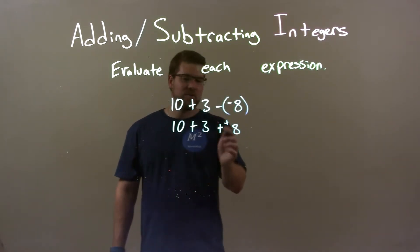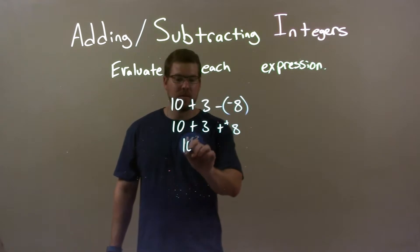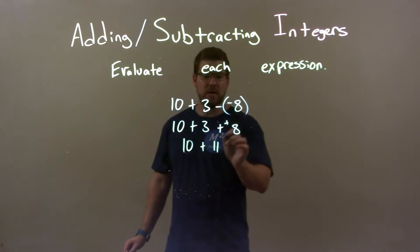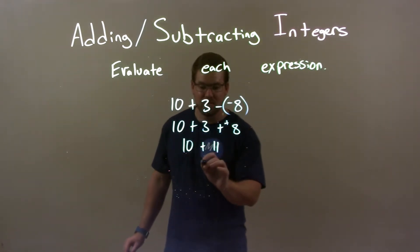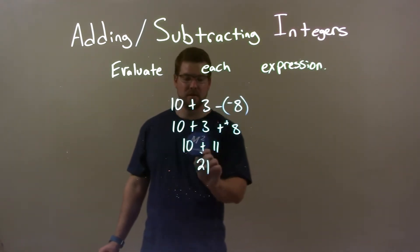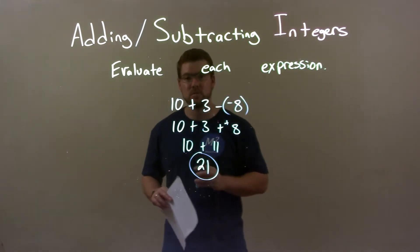Let's just do the 3 and the 8 together. First, bring the 10 down. 3 plus 8 is 11. Now we have 10 plus 11 is 21. So that's it. Final answer here is 21.